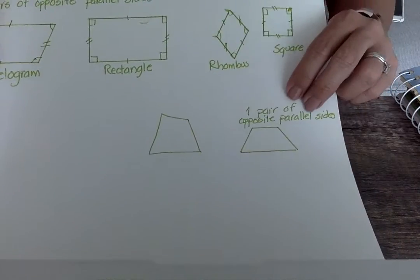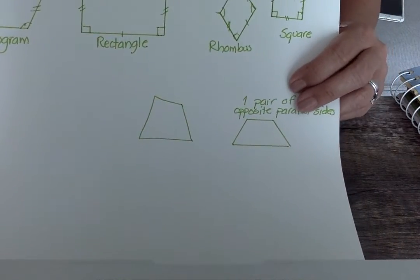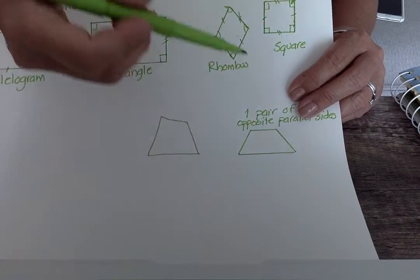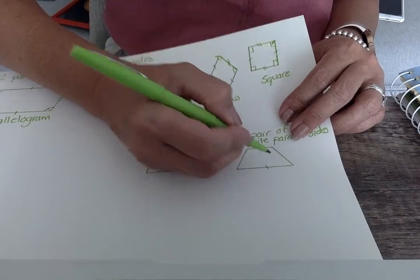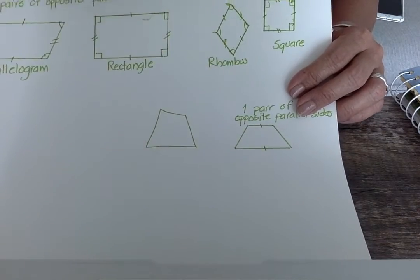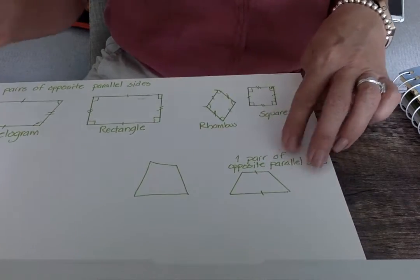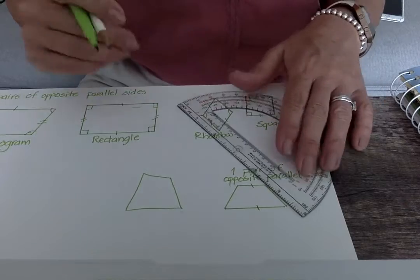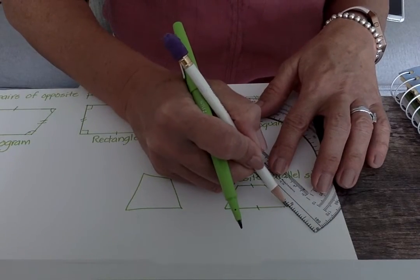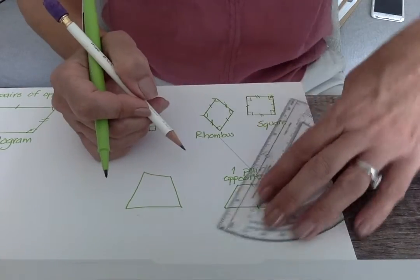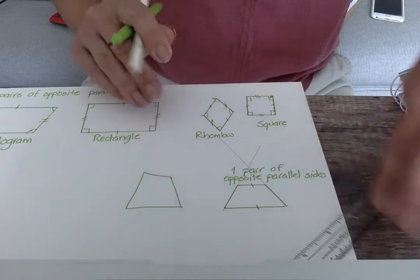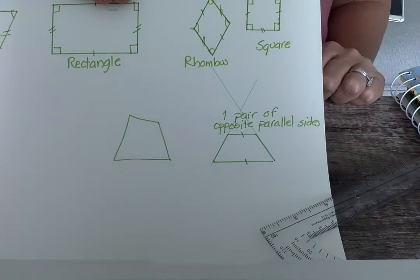And then there's the trapezoid. And the trapezoid, the fact that it also makes it different, is that it only has one pair of parallel lines. So only this and this line are parallel, but these two are not. If I were to extend, remember lines can extend indefinitely. So if I were to extend this line all the way here, and then this one, look, they become intersecting lines. They are not parallel.